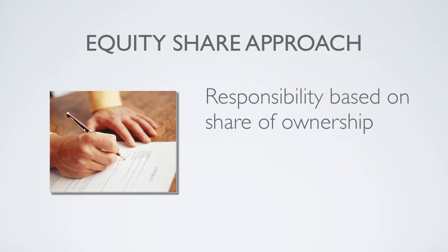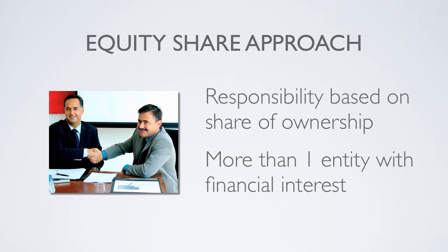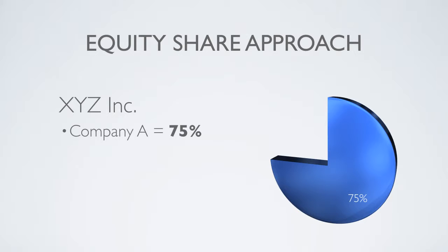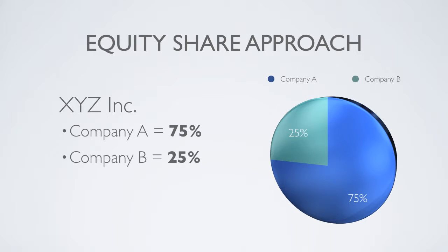The equity share approach. Under the equity share approach, a company is responsible for emissions from joint operations based on its share of ownership, also known as its equity share. To illustrate, let's assume Company A and Company B have a joint operation called XYZ Inc. Company A has a 75% equity share in XYZ, and Company B owns the remaining 25%. Under this approach, Company A would account for 75% of XYZ's emissions, and Company B would account for the remaining 25%.